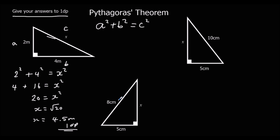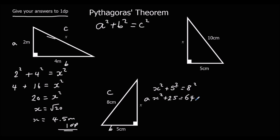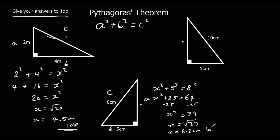This next one: the long side is C, and these two are A and B. So x squared plus 5 squared equals 8 squared. x squared plus 25 equals 64. Take away the 25: x squared equals 39. Then x is the square root of 39. Typing that into the calculator gives 6.2 to 1 d.p. So 6.2 centimeters to 1 d.p.